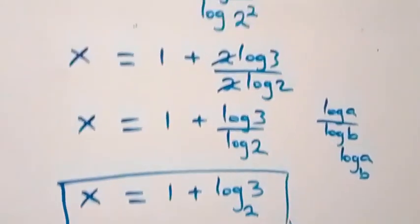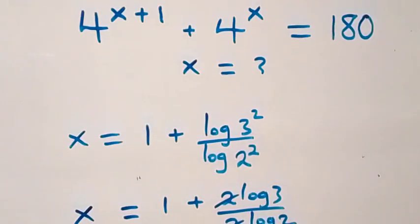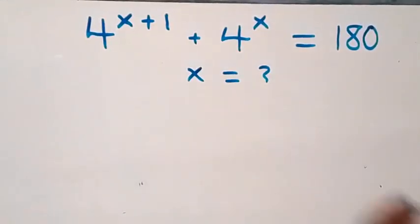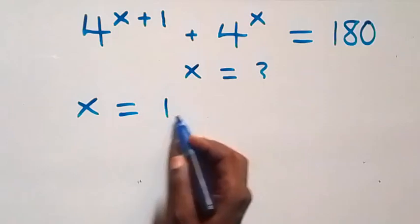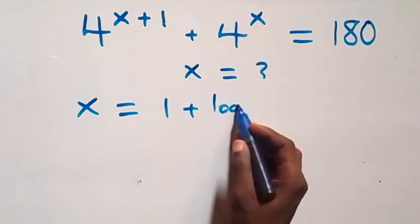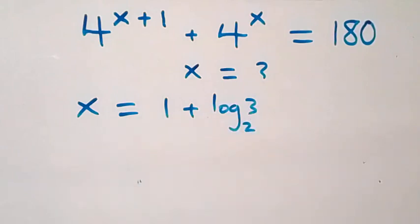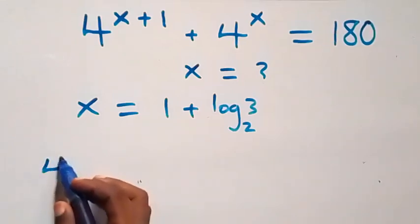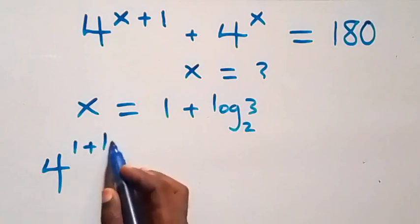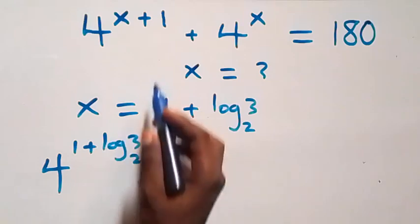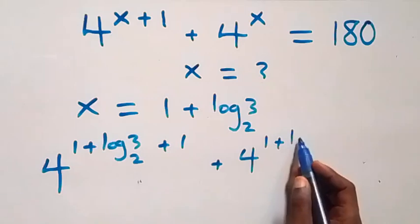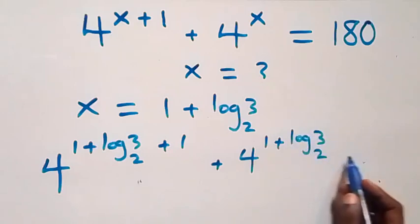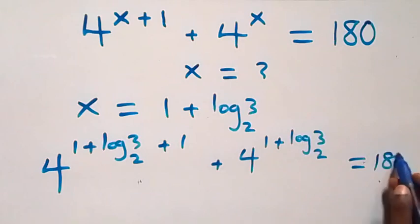Let's check if we satisfy this given problem. We substitute the value of x, which is x equals 1 plus log 3 to base 2. We get four raised to power 1 plus log 3 to base 2, plus 1, plus four raised to power 1 plus log 3 to base 2, equals 180.